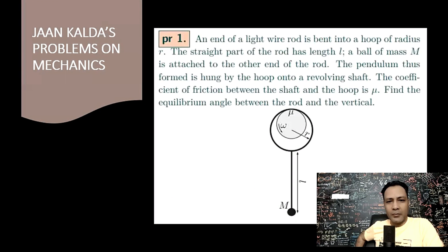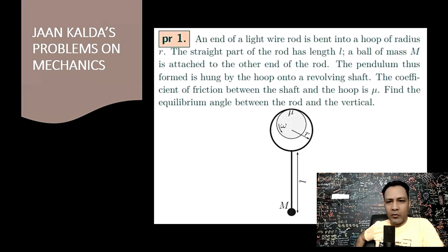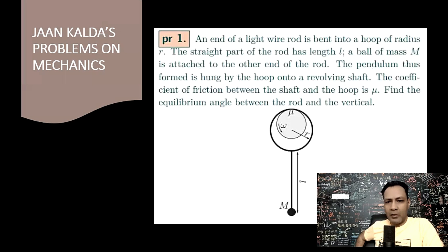Let's look at problem one from Jaan Kalda's Problems on Mechanics. The question states: an end of a light wire rod is bent into a hoop of radius r. The straight part of the rod has a length l. A ball of mass m is attached to the other end of the rod. The pendulum thus formed is hung by the hoop onto a revolving shaft. The coefficient of friction between the shaft and the hoop is mu. Find the equilibrium angle between the rod and the vertical.